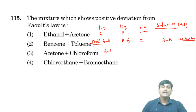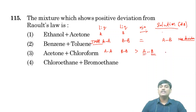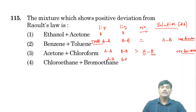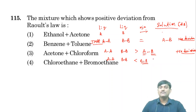Conversely, if A–A and B–B forces are less than A–B forces, the solution has very strong intermolecular attraction, very low vapor pressure and low escaping tendency — this is negative deviation. For ethanol and acetone: ethanol–ethanol interactions are strong, and acetone–acetone interactions are strong, but ethanol–acetone interactions are weaker. Therefore, this mixture exhibits positive deviation from Raoult's law.